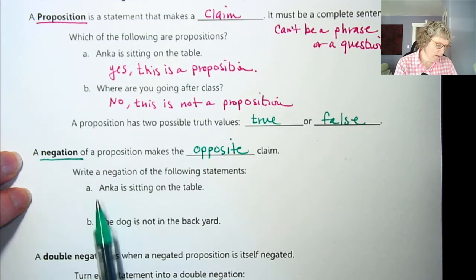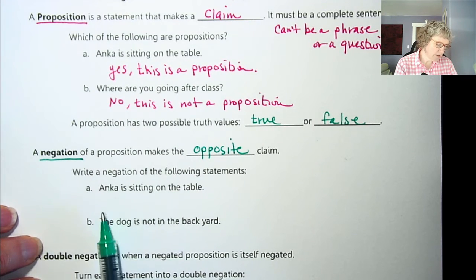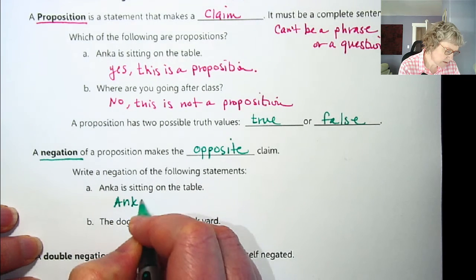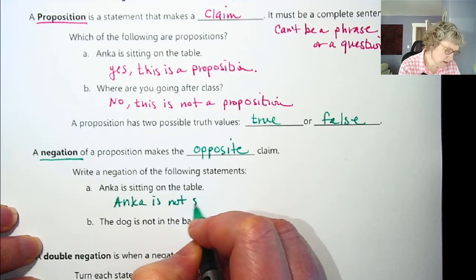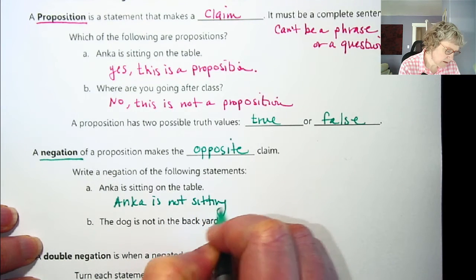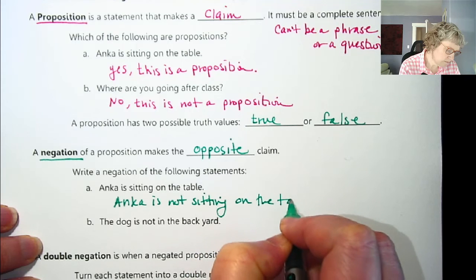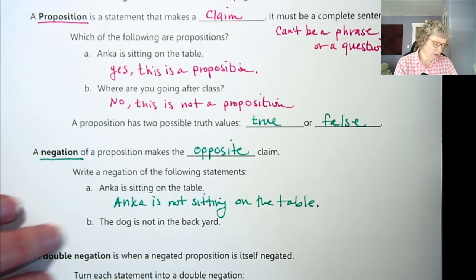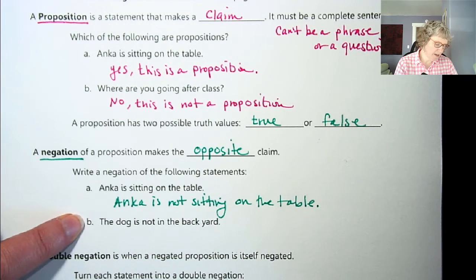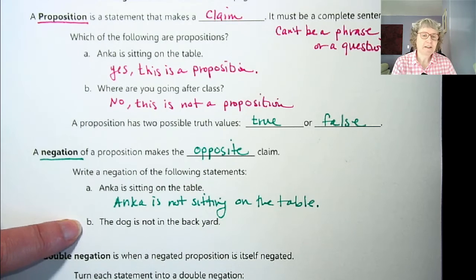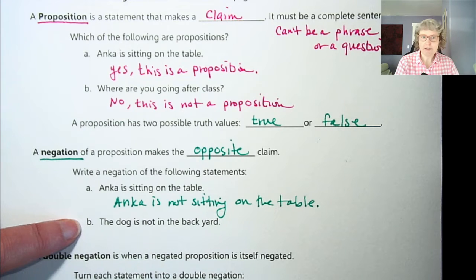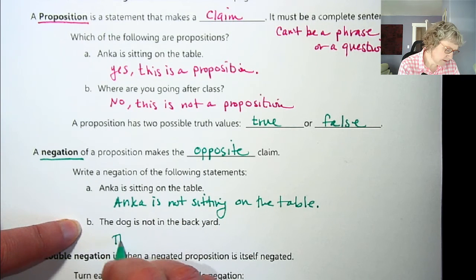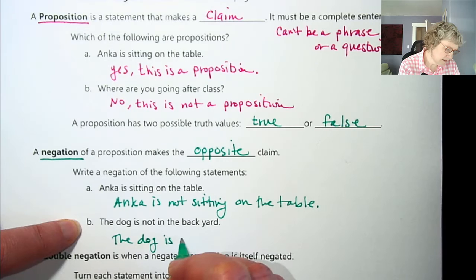So taking the same one, write a negation. Anka is sitting on the table. So I could say Anka is not sitting on the table. And now we have a different one, because this is a proposition: The dog is not in the backyard. So it's already in the negative. So to negate that, we would make it go the other way. The dog is in the backyard.